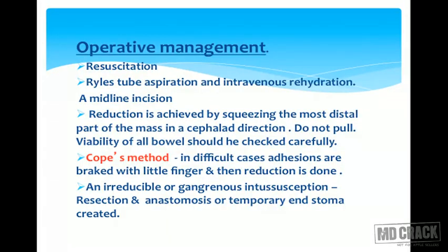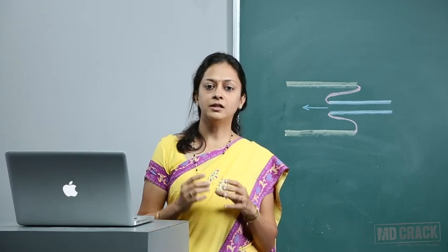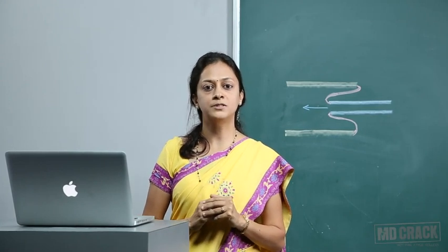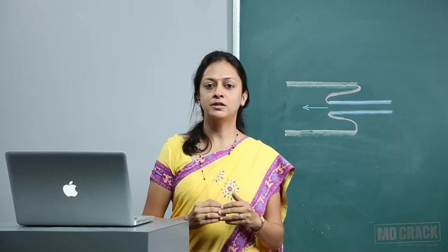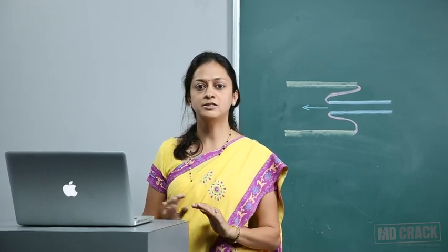Operative management: resuscitation followed by Ryle's tube aspiration and intravenous rehydration. A midline incision is taken. Reduction is achieved by squeezing the most distal part of the mass in the cephalad direction — do not pull. Viability of the small bowel should be checked carefully. If there are adhesions between the inner and outer part, break them with the finger — this is specifically known as Cope's method.